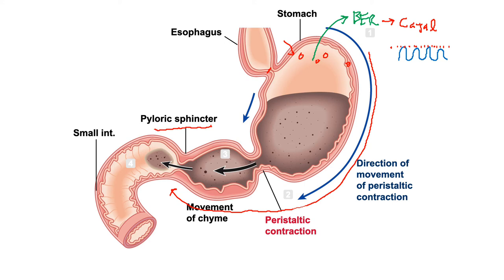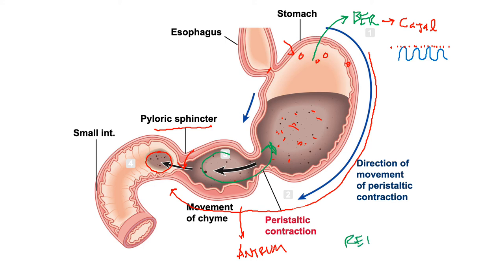The contraction builds and becomes more vigorous as it moves toward the antrum. This peristaltic wave propels the chyme — the bolus mixed with acidic solution — toward the pyloric sphincter. A tiny bit is pushed through the pyloric sphincter before it closes tightly. When the peristaltic contraction ultimately reaches the sphincter, it closes and no more emptying takes place. The chyme that hits the closed sphincter is propelled backwards into the antrum — and this repeats with each contraction. We call this retropulsion: throwing chyme backwards over and over to mix it.